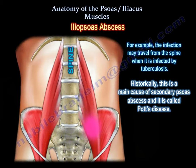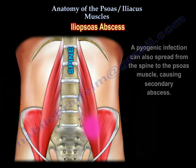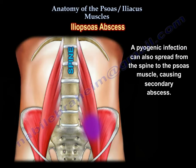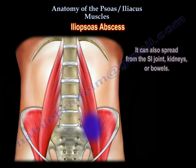Historically, this is a main cause of secondary psoas abscess and is called Pott's disease. A pyogenic infection can also spread from the spine to the psoas muscle causing a secondary abscess, and it can also spread from the sacroiliac joint, from the kidneys, or from the bowels.